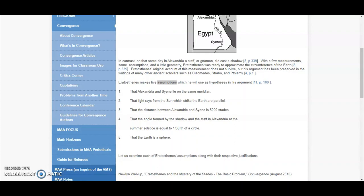4. That the angle formed by the shadow and the star in Alexandria of the summer solstice is equal to 1/50th of a circle. 5. That the earth is a sphere.